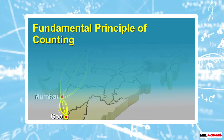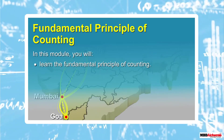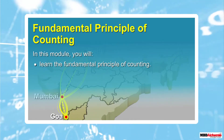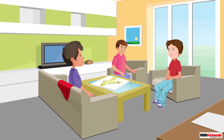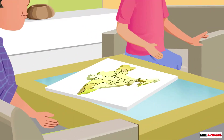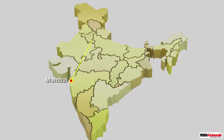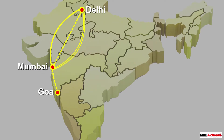In this module you will learn the fundamental principle of counting. Three friends, Sid, Neil, and John, are planning to visit Goa. They stay in Delhi. First they reach Mumbai from Delhi — there are three ways to reach Mumbai: they can take an airplane, travel by road, or travel by train.